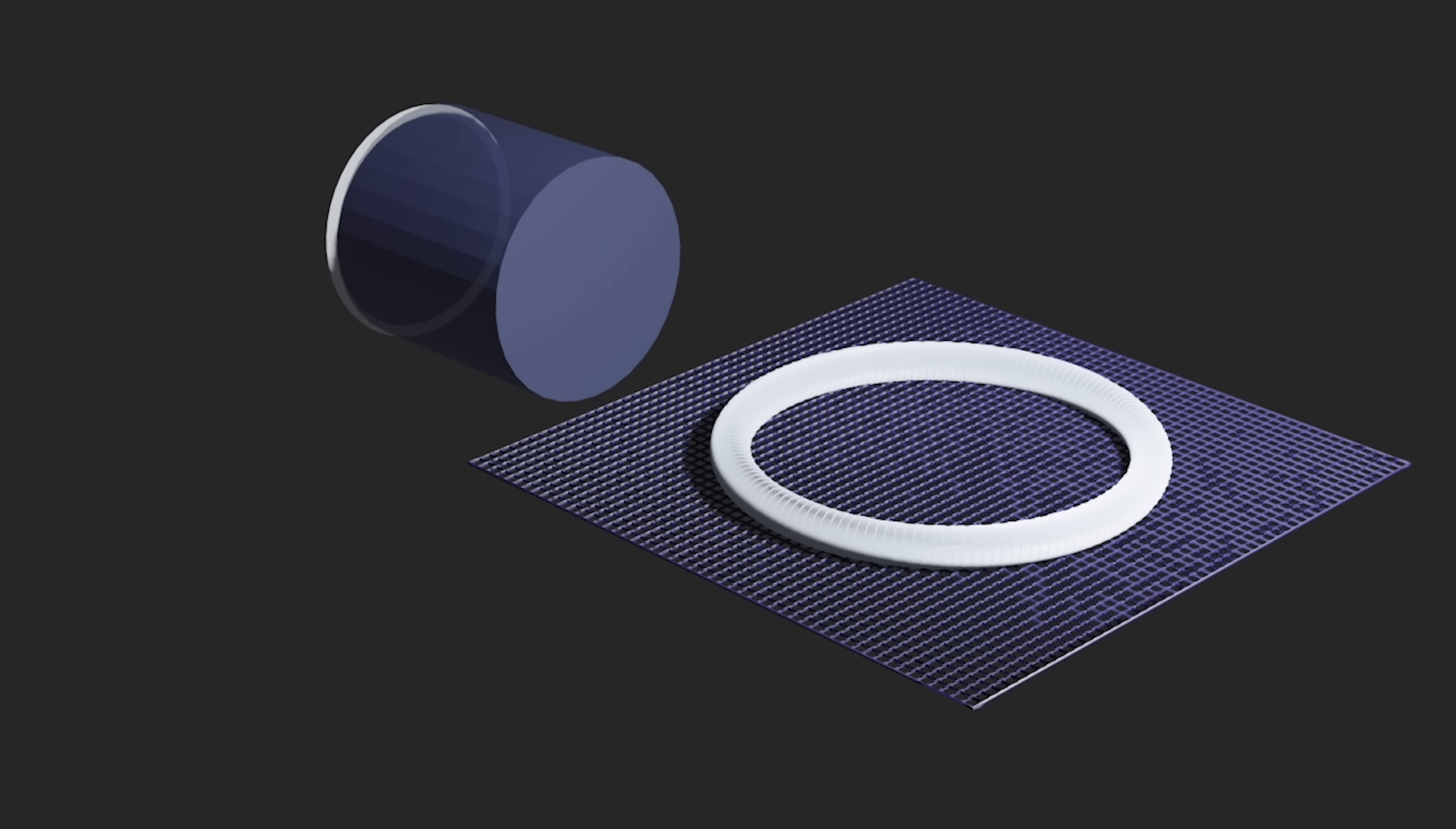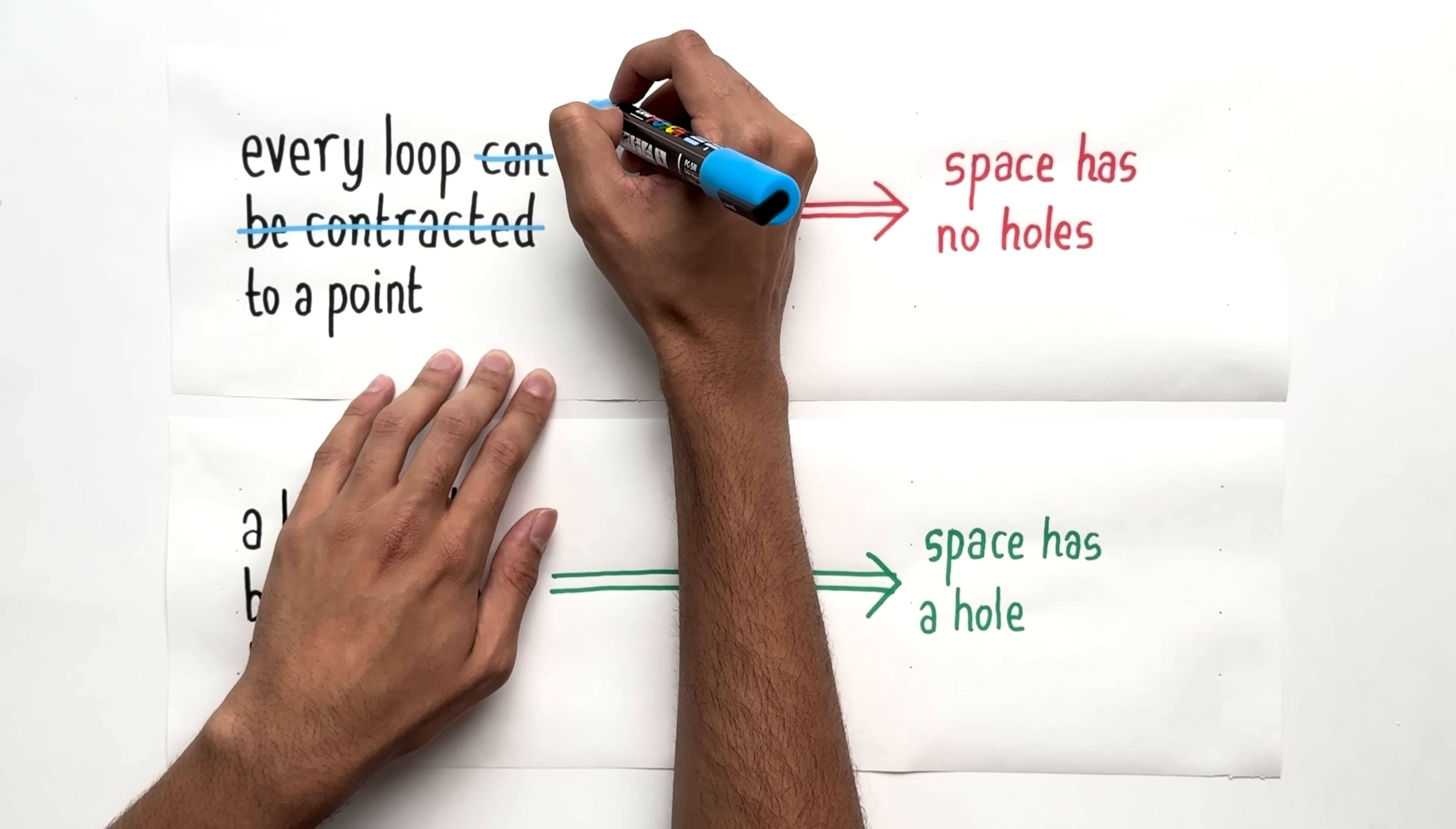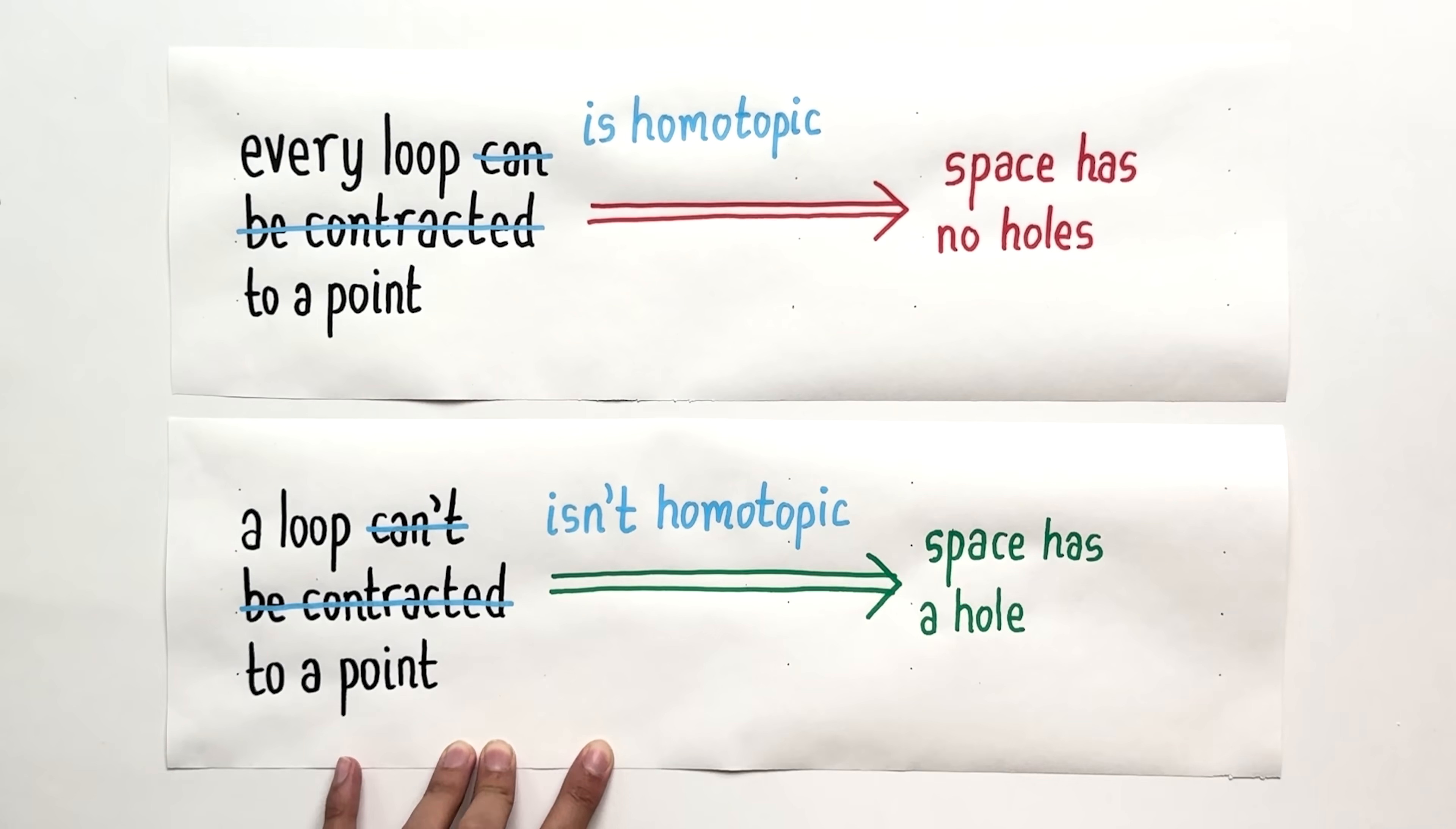As a special case, it may happen that a loop is contracted to a point. Then we say that the original loop is homotopic to a point. Now we can make our earlier intuition precise. If in our space x, every loop is homotopic to a point, the space should have no holes. But if there's a loop which is not homotopic to a point, the space should have a hole.